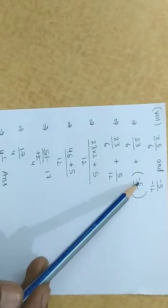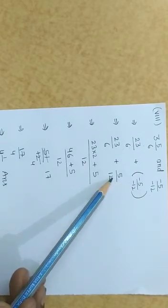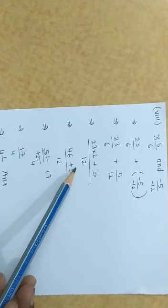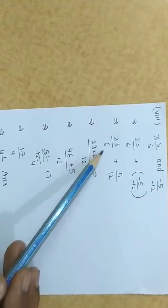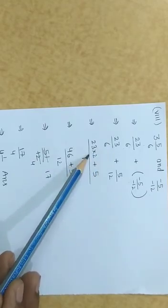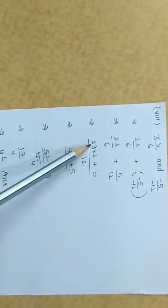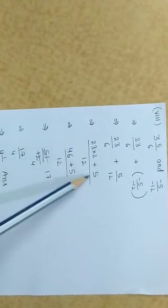Now taking LCM of 6 and 12, which is 12. Divide 6 by 2 to get 12. So 23 divided by 2 and 12 times 1 equals 2. So 5 times 1 equals 5. Change 23 multiplied by 2 equals 46 plus 5.